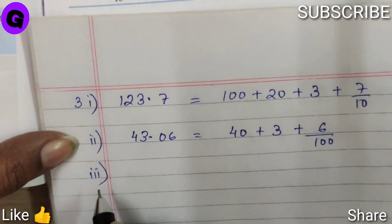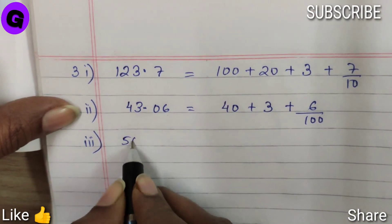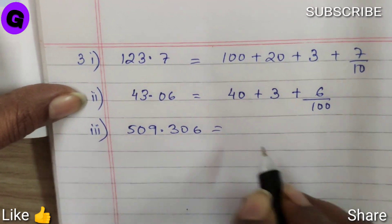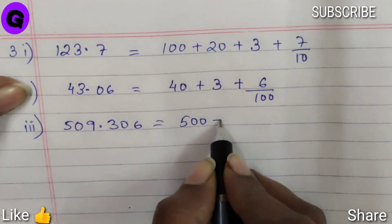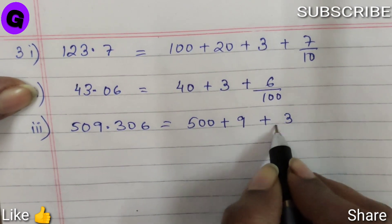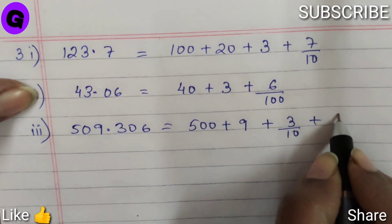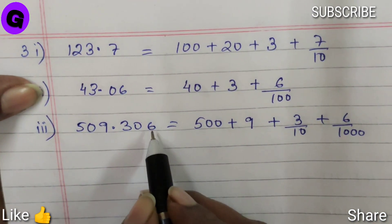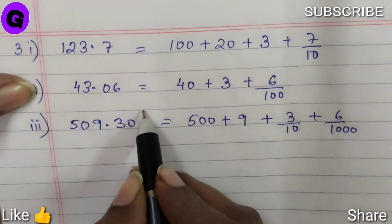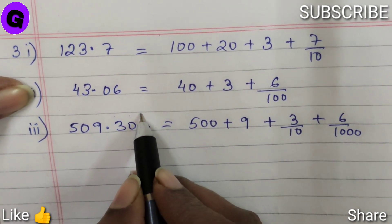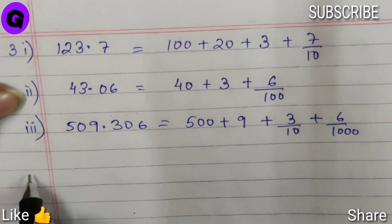Number 3, 509.306, can be written as 500 plus 9 plus 3 by 10 plus 6 by 1000, because your 6 is at thousandths place. This is tenths, hundredths, thousandths.